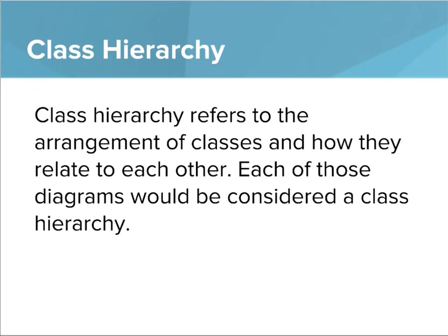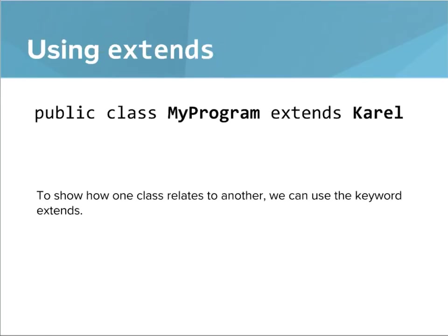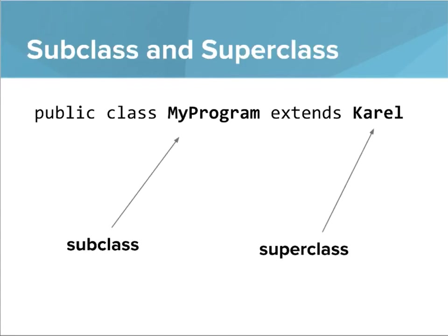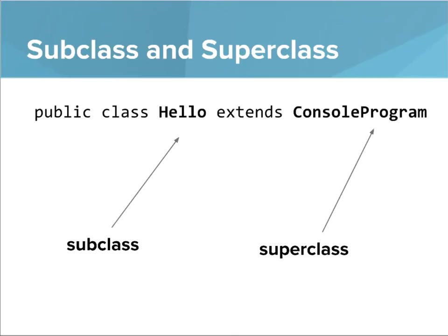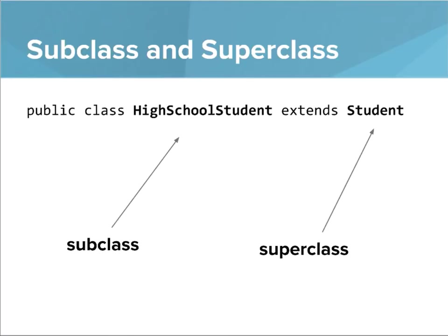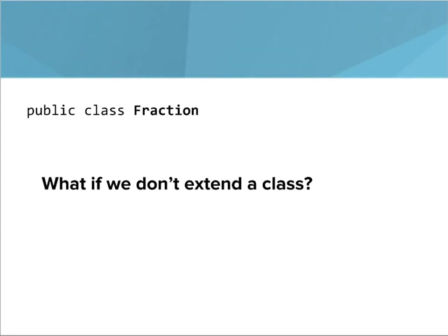A class hierarchy refers to the arrangement of classes and how they relate to each other. Each of those diagrams would be considered a class hierarchy. The way we do this — and the way we've already been doing it — is by using the `extends` keyword. When we say something like `public class MyProgram extends Carol`, we're showing that MyProgram is a more specific instance of a Carol program. The name of our class is the subclass, and whatever we're extending is the superclass. So here MyProgram is the subclass and Carol is the superclass. Similarly, Hello was the subclass and ConsoleProgram was the superclass, and HighSchoolStudent is the subclass and Student is the superclass.